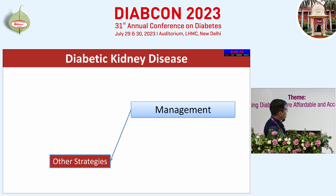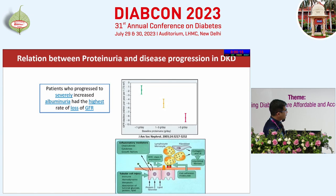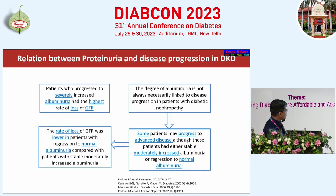Regarding proteinuria regression — patients who progress to severely increased albuminuria have the highest rate of GFR decline. Once progressive proteinuria is observed, the GFR starts to decline even faster. The degree of albuminuria is not always necessarily linked to disease progression in diabetes — patients without albuminuria will progress, but at a lower rate. Patients who regressed from microalbuminuria to normal albuminuria had a better GFR slope versus those who retained microalbuminuria, and those who failed to regress did the worst.